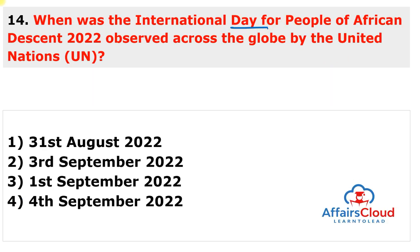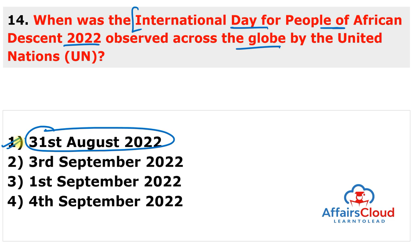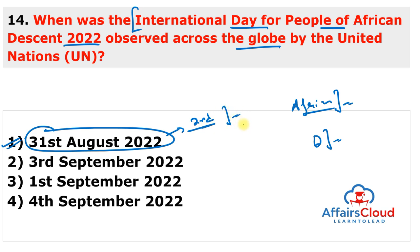The International Day for People of African Descent 2022 was observed on 31st August 2022 to promote the extraordinary contributions of the African diaspora and to eliminate all forms of discrimination against people of African descent. This was the second observance of the day, meaning it was first observed in 2021, at the halfway point of the International Decade for People of African Descent (2015–2024).